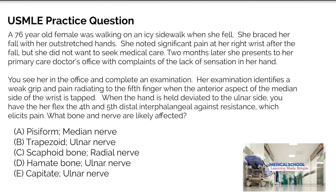You see her in the office and complete an examination. Her examination identifies a weak grip and pain radiating to the fifth finger when the anterior aspect of the median side of the wrist is tapped. When the hand is held deviated to the ulnar side, you have her flex the fourth and fifth distal interphalangeals against resistance, which elicits pain. What bone and nerve are likely affected?